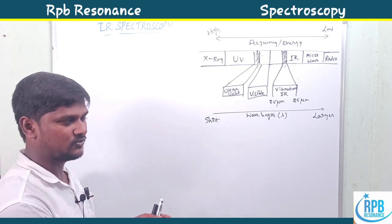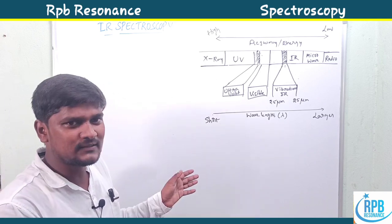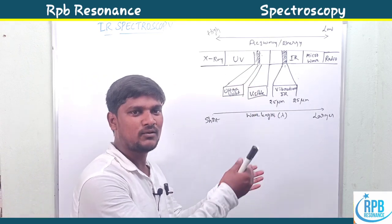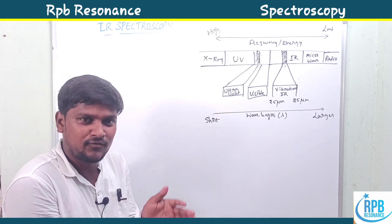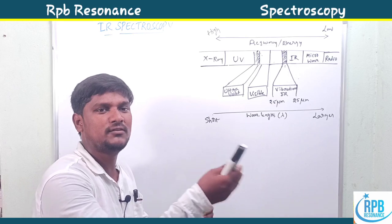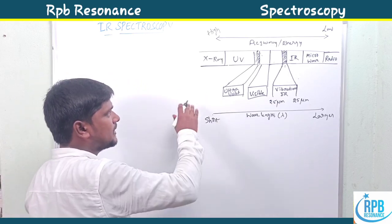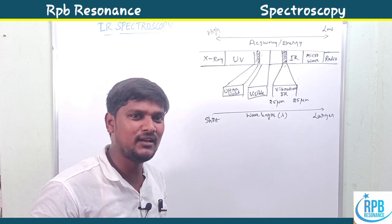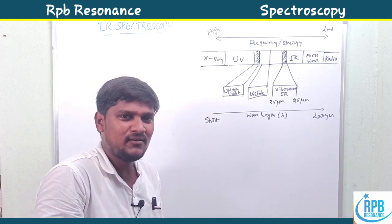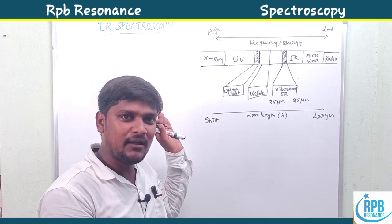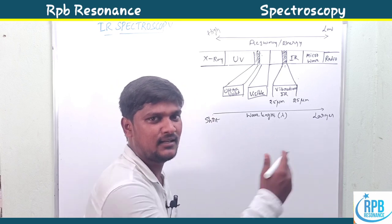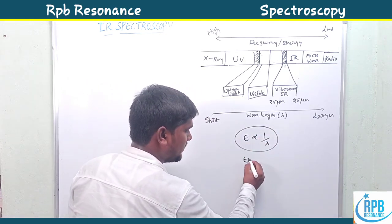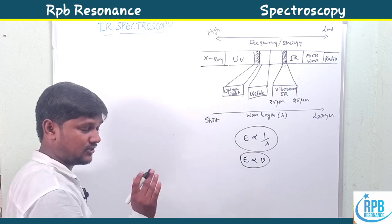Based on the electromagnetic spectrum, we observe radiations like cosmic rays, gamma rays, X-rays, UV-visible rays, IR rays, microwave rays, and radio frequency rays. Based on the energy level and the electromagnetic radiation energy, we can use different kinds of spectroscopies. From left to right, wavelength increases; if wavelength increases then frequency decreases. So left to right, frequency is decreased. Wavelength and energy are inversely proportional, and energy and frequency are directly proportional to each other.